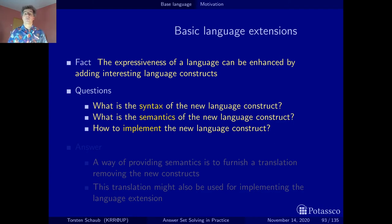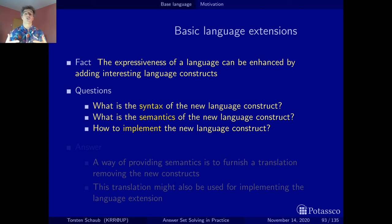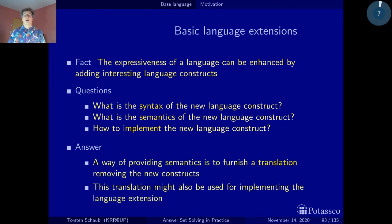The good thing about these basic language constructs is that they enhance the expressiveness of the language in the sense that it's more convenient to model, but they do not enhance the theoretical expressiveness in a way that makes the whole language more complex. There are other language constructs that do that, but we will cover those in a separate part. Now, knowing that these constructs are basically a convenience feature — syntactic sugar — we can translate them back into normal logic programs, which is the approach I prefer to show you now to answer all three questions.